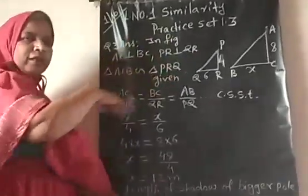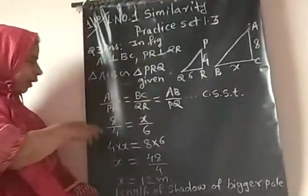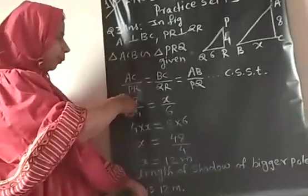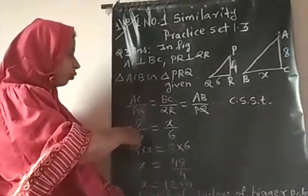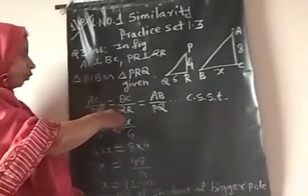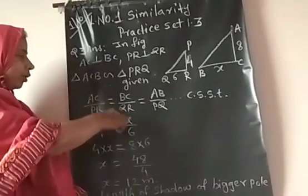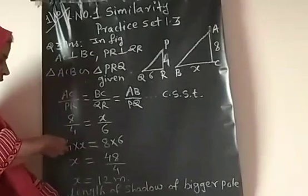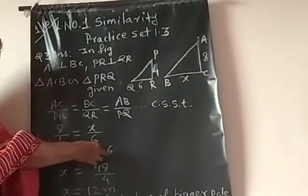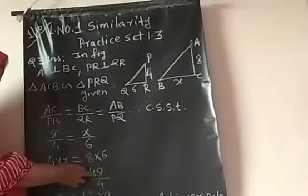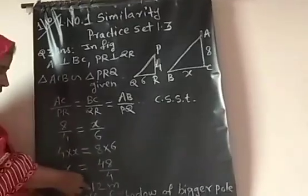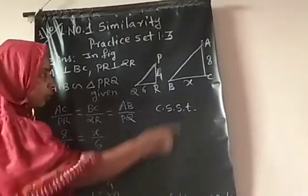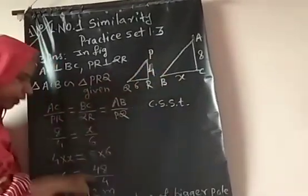Now, putting in the values given in the question: AC value is 8, PR value is 4, is equal to BC which we are going to find as X, and QR is given as 6. By cross multiplication, 4X is equal to 8 times 6, which is 48. Therefore X equals 48 upon 4, so X equals 12 meters. Therefore, the length of the shadow of the bigger pole is 12 meters.